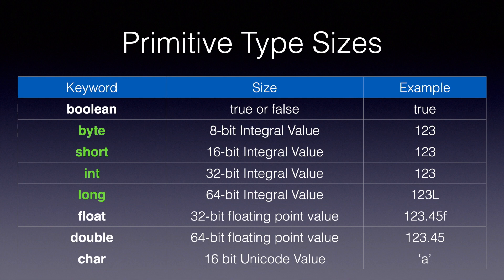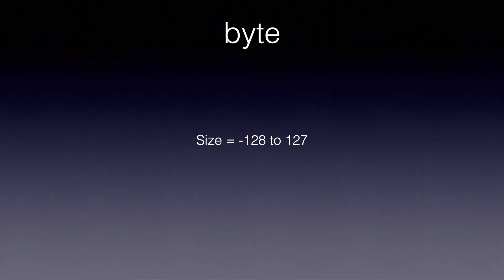You don't have to remember the sizes or the range for the exam. It's still good to remember the sequence, and remembering size is not tough because the bigger type is double the previous one — for example, short is double of byte. It's good to know that a byte can store from minus 128 to positive 127, and it cannot store any number outside of this range.